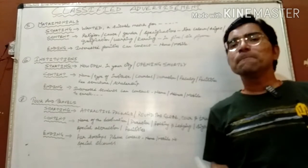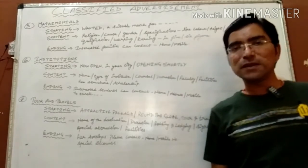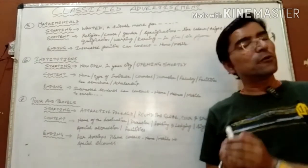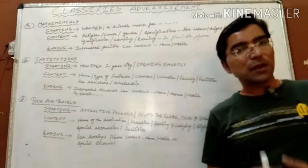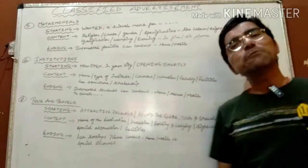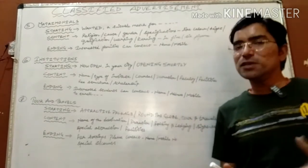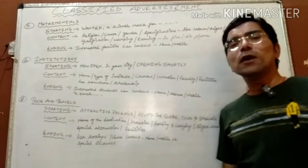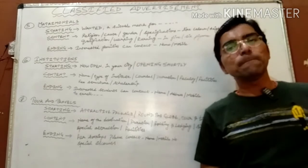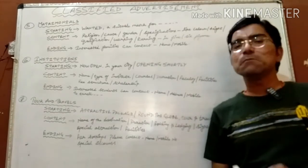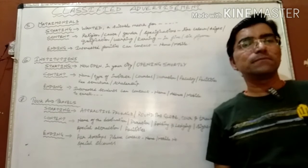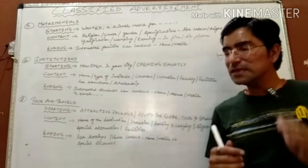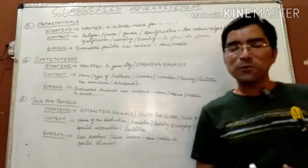With this, we have completed the advertisement section. Topics completed so far include notice, advertisement (commercial and classified) — that's two topics of four markers. The remaining four-marker topics are poster and invitation and replies. Before those, in the next session, we will discuss the first poem of the literature section: 'My Mother at Sixty-Six.' Thank you, be safe, goodbye.